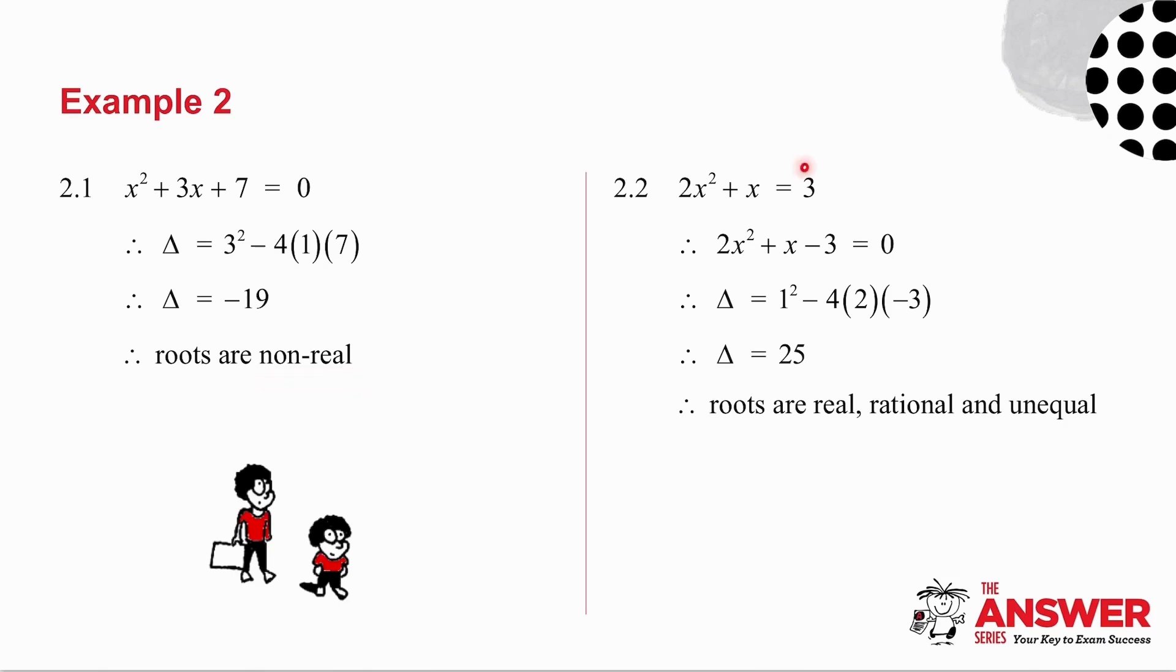In 2.2, the first thing I do is write the equation in standard form, then I work out delta and I get delta to be 25. 25 is positive, so my roots are real. 25 is a perfect square, so they are rational. 25 is not equal to 0, so the roots are unequal.